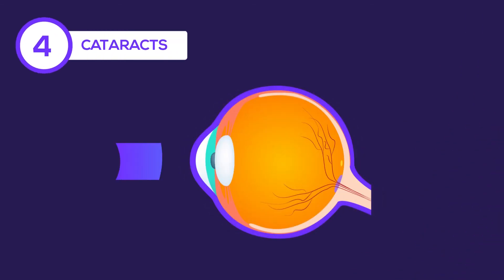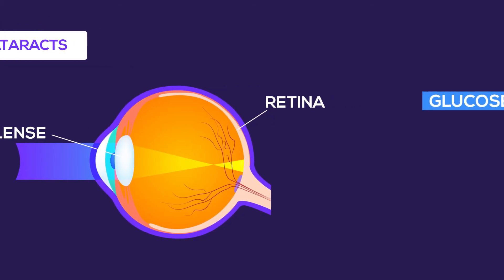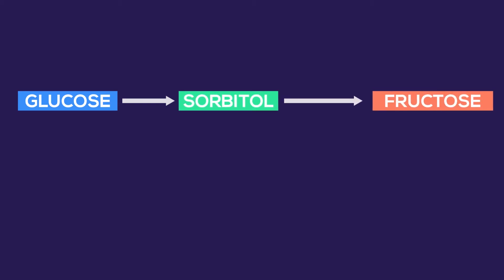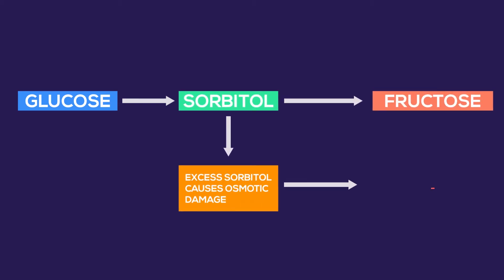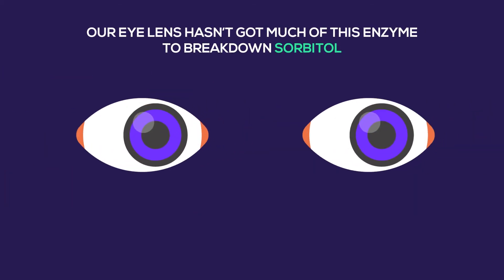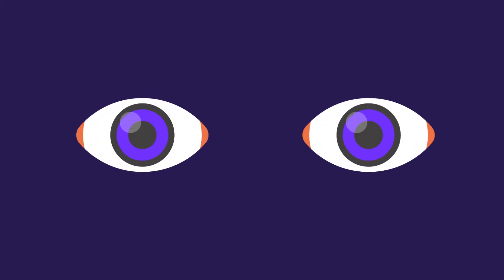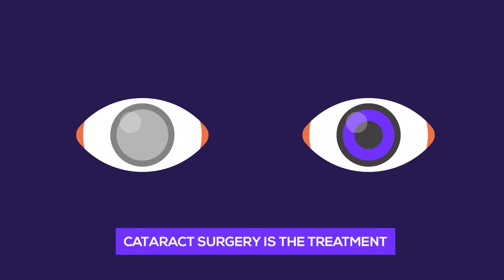Cataracts. The job of the eye lens is to focus the light beams onto the retina. To accomplish this task, a good functioning lens should be transparent. Glucose is converted to a substance called sorbitol in our body. The high osmotic properties of sorbitol can cause fluid accumulation within the tissues. To prevent this, sorbitol is broken down into fructose by an enzyme called sorbitol dehydrogenase. Unfortunately, our eye lens hasn't got much of this enzyme to break down sorbitol. Therefore, in people with high blood glucose levels, sorbitol accumulates in the eye lens and makes it swollen and opaque like a white cloud. Cataract surgery is the treatment option when it causes vision impairment.